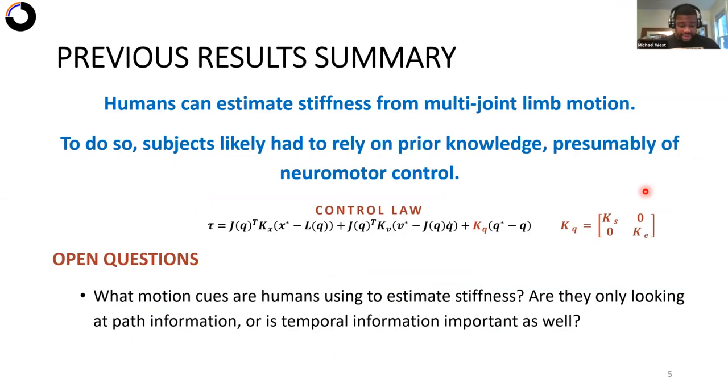So the fact that humans are able to estimate changes in joint stiffness from visual observation of motion leads to two key conclusions. One, humans assume stiffness affects motion. And two, it is likely that how humans produce their own motion is congruent with the control law used in our simulation.